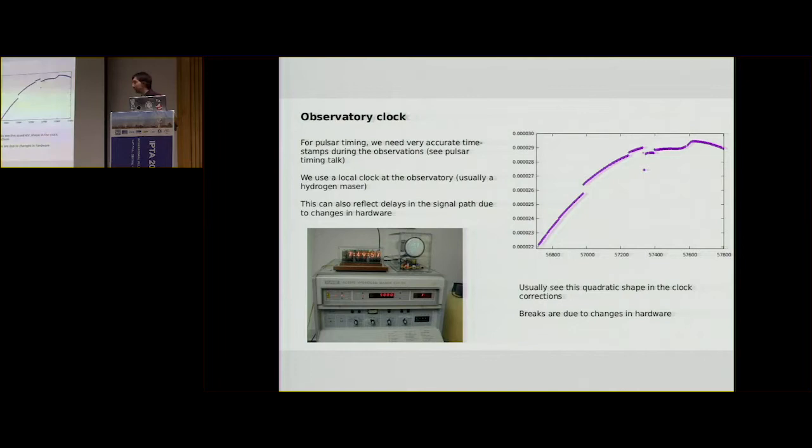So kind of moving back to the nuts and bolts of how telescopes work. Another important thing that we use is the observatory clock. So these are typically hydrogen masers. They can be other things. They can be rubidium clocks. But basically we want something very precise to timestamp our observations.